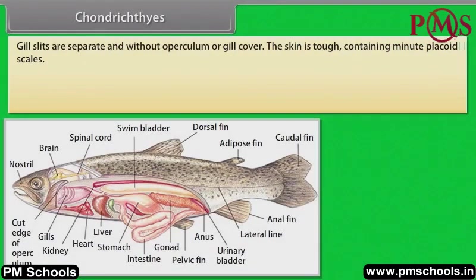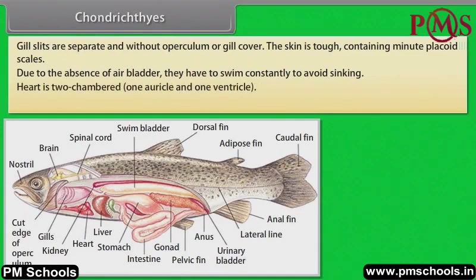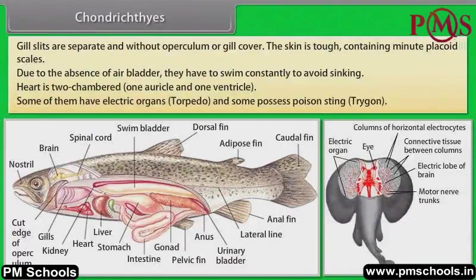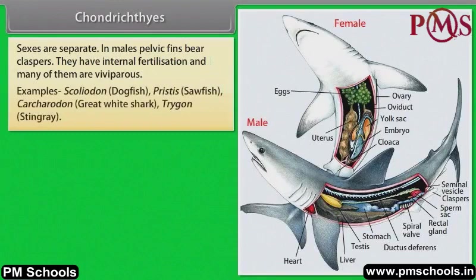Gill slits are separate and without operculum or gill cover. Their skin is tough, containing minute placoid scales. Due to the absence of air bladder, they have to swim constantly to avoid sinking. Heart is two-chambered: one auricle and one ventricle. Some of them have electric organs (torpedo), and some possess poison sting (trigon). Sexes are separate. In males, pelvic fins bear claspers. They have internal fertilization and many of them are viviparous.